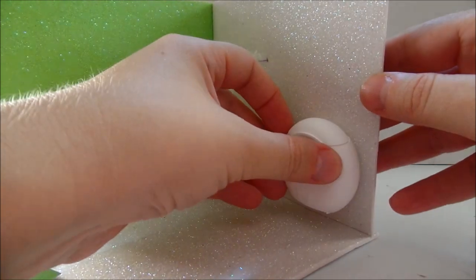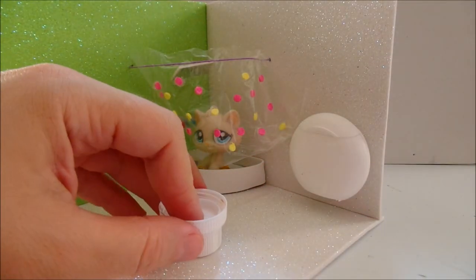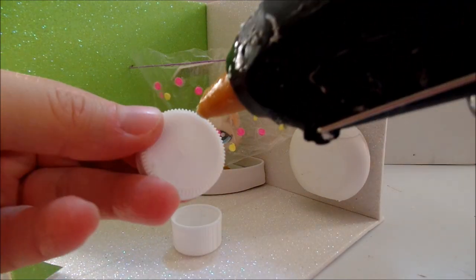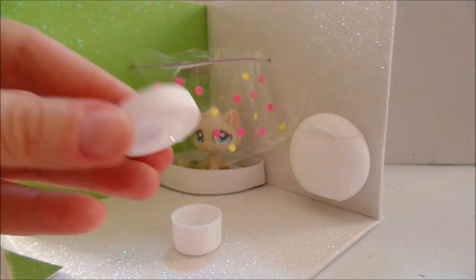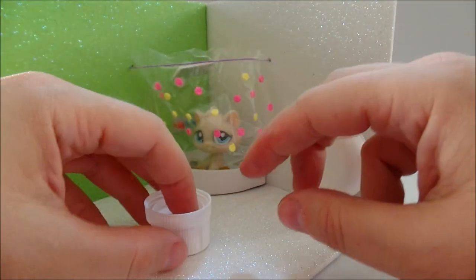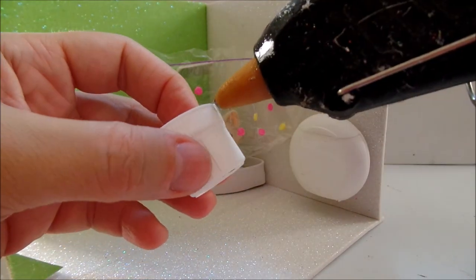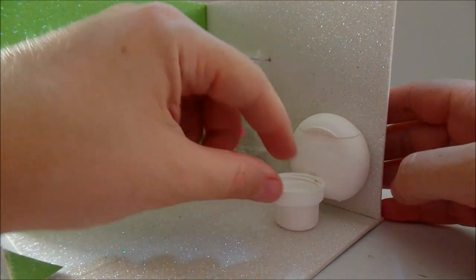First I took a floss container and glued it to the wall. Next I am taking two caps from different bottles. Glue them together on one line and attach them to the floss container.